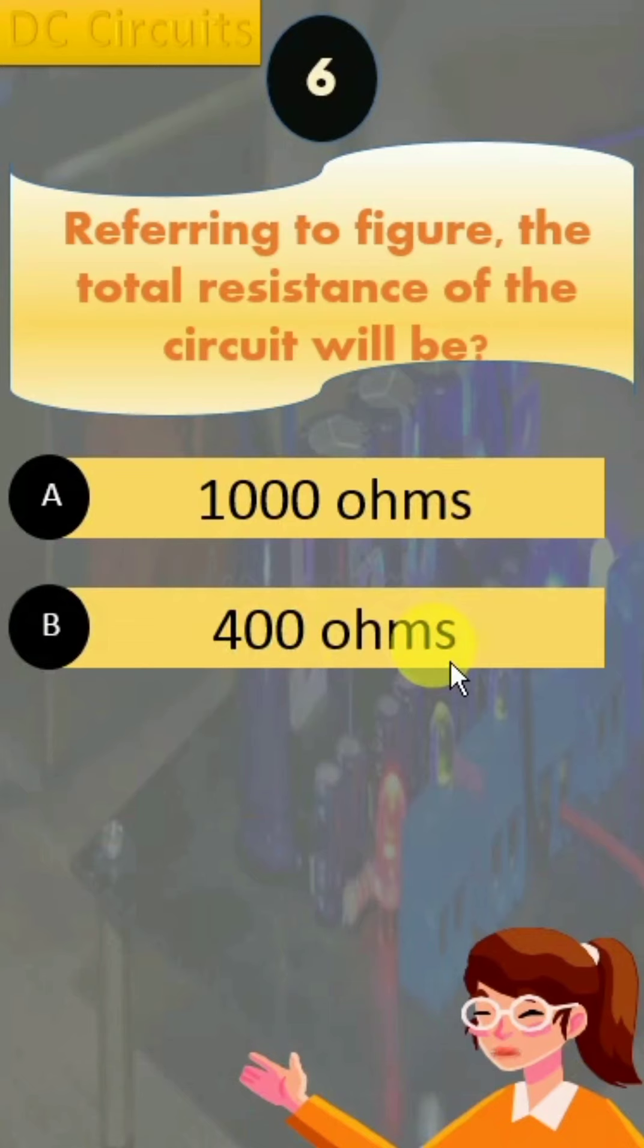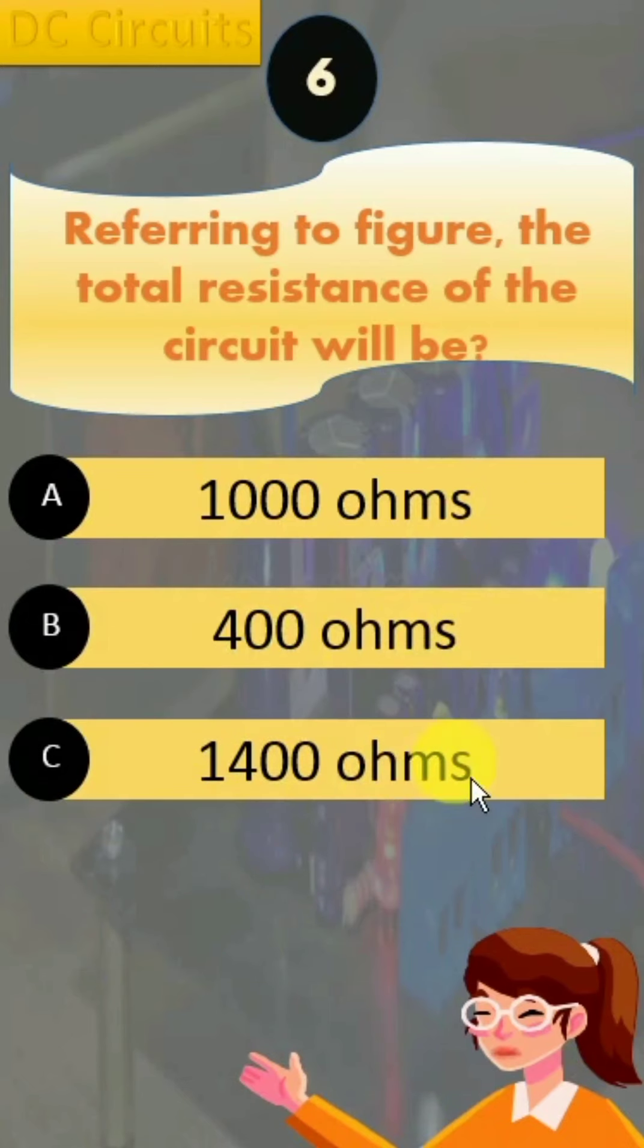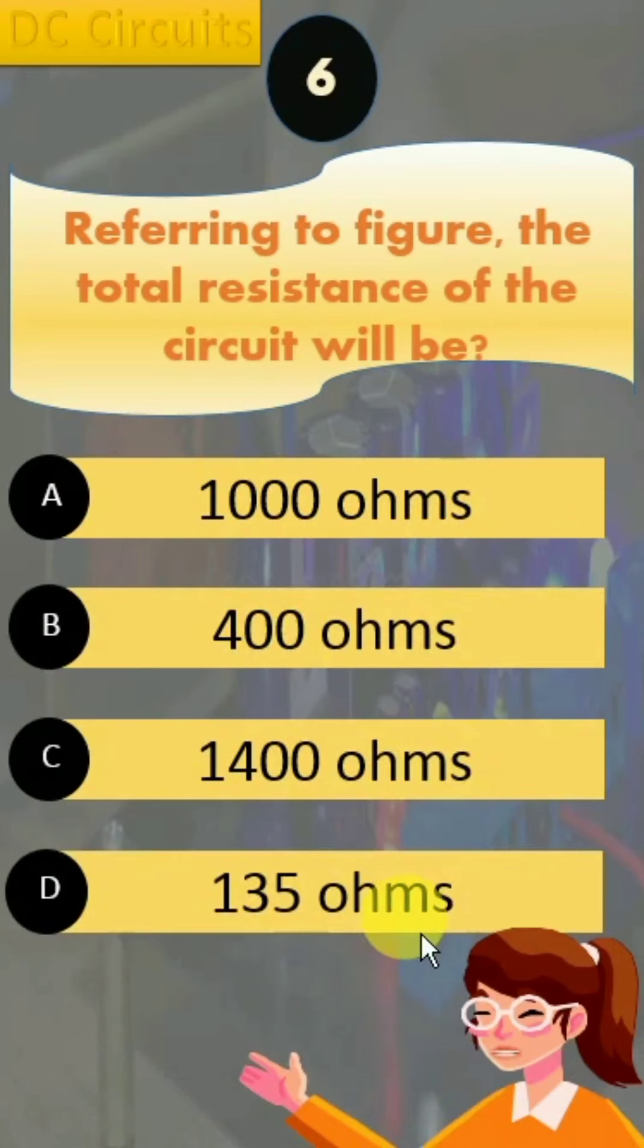B, 400 ohms. C, 1400 ohms. And D, 135 ohms. First of all, let us write down the data we have. 200 volt DC. First bulb has power of 100 watt, 200 volt, and second bulb has power of 40 watt, 200 volts.